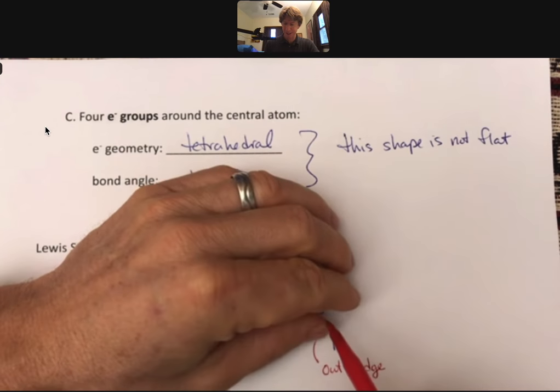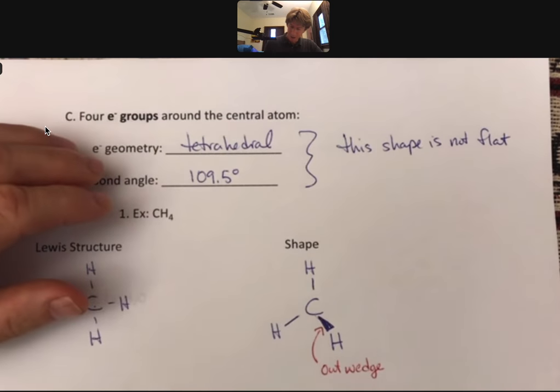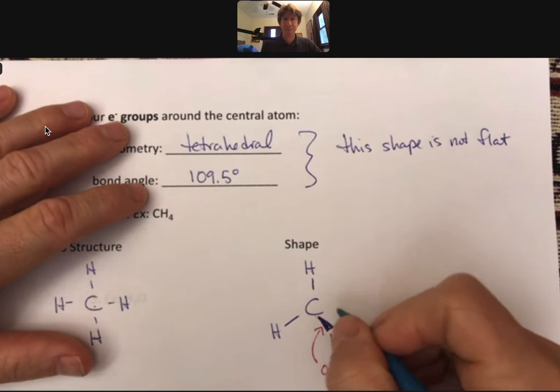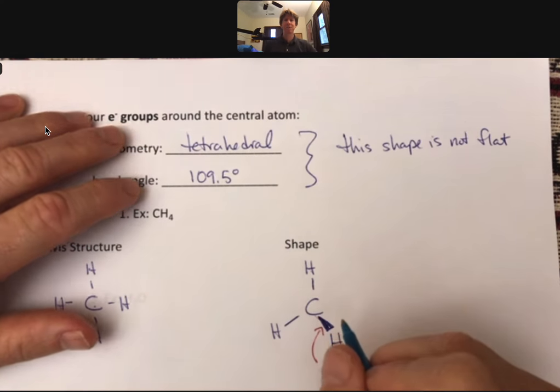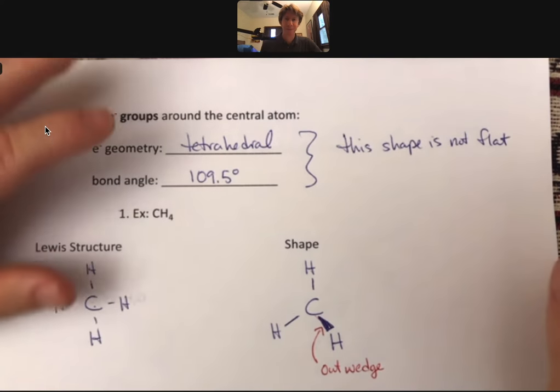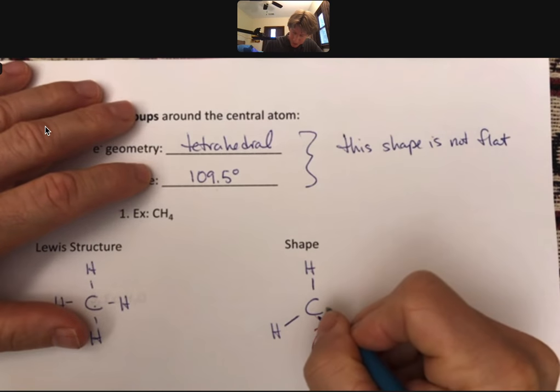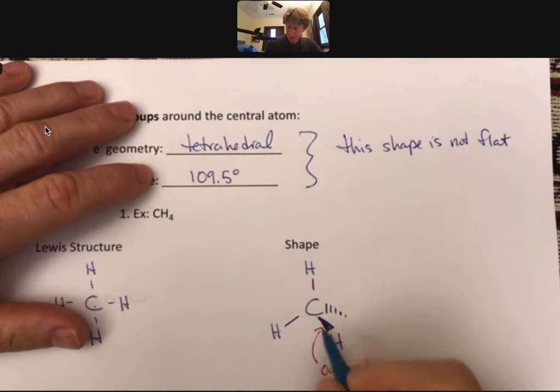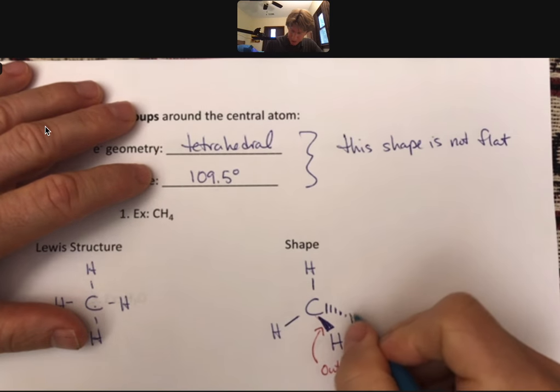And it's not sticking straight up. Now the other one is going to be going back into the page. As things go back into the page, as they get farther away, they get smaller. They also get wider. And that is a series of angled dashed lines pointing down. And then there's your other H.